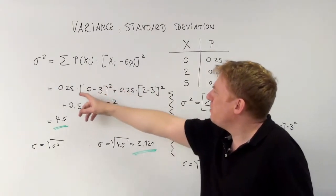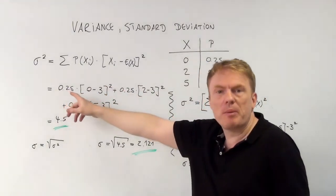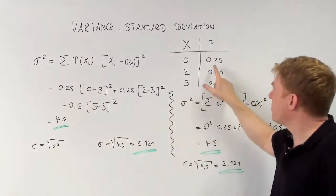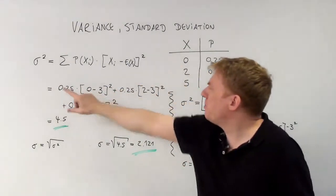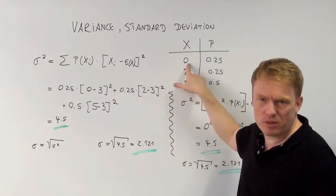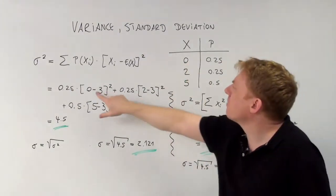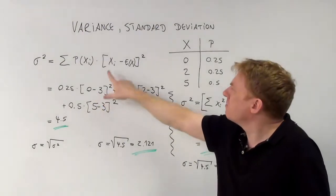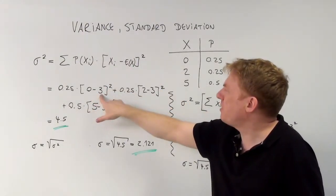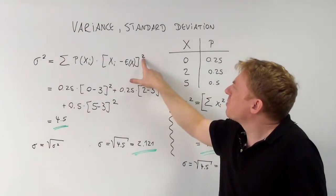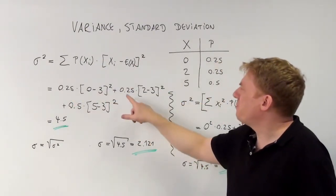So here, what can we see? The first probability was 0.25. We compute 0.25 times the first value x₁, which was 0, minus the expected value — that is (0 − 3). Don't forget the square. So this gives us the first term.